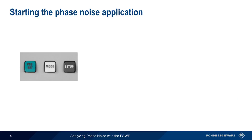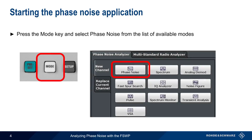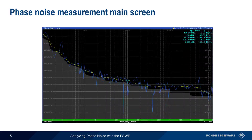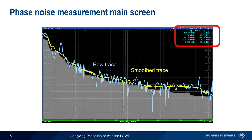To start the phase noise application on the FSWP, simply press the Mode key and then select Phase Noise from the list of available modes. This is the main phase noise measurement screen. In most cases, the source signal will be automatically detected and measured. By default, phase noise results are given as both raw and smooth traces of the single-sideband phase noise, and are also shown as numeric spot noise values. If cross-correlation is used, the gray area beneath the trace shows the cross-correlation gain.